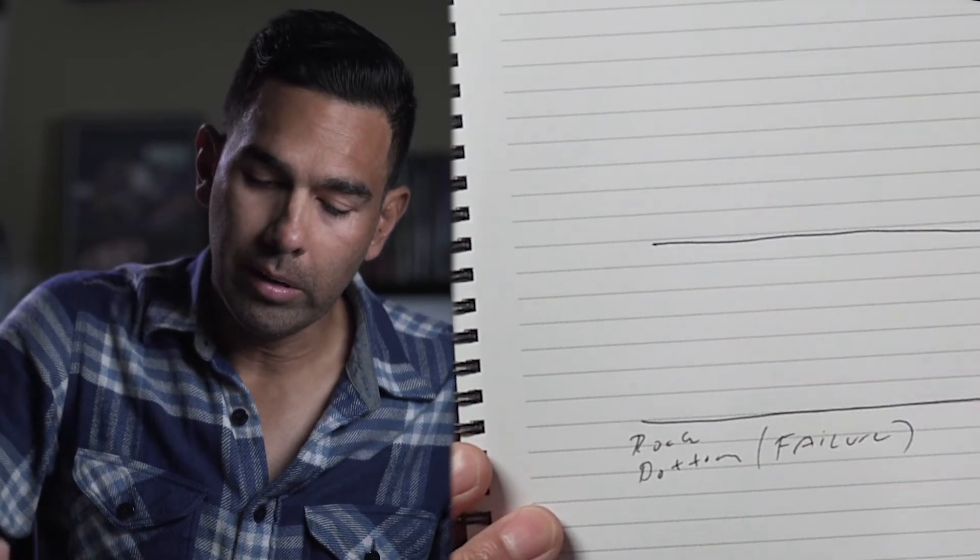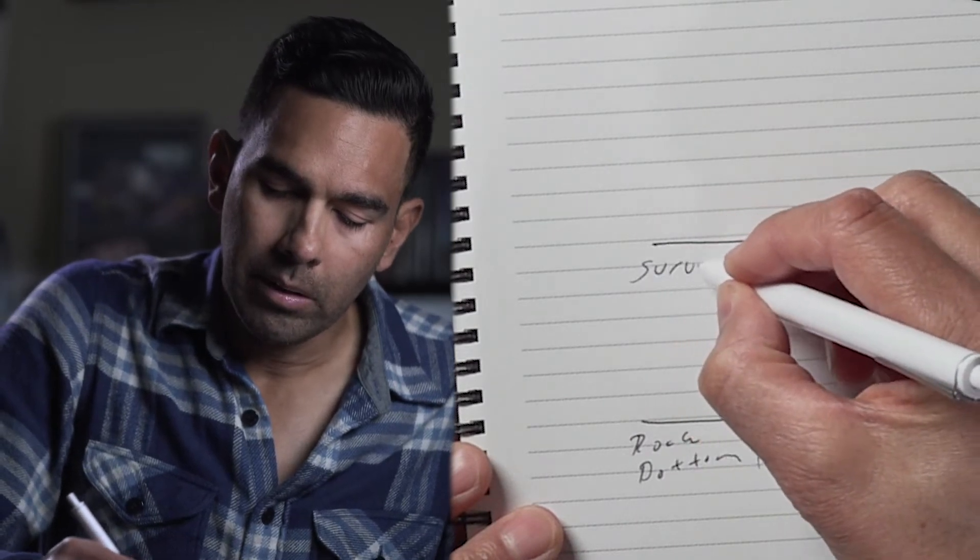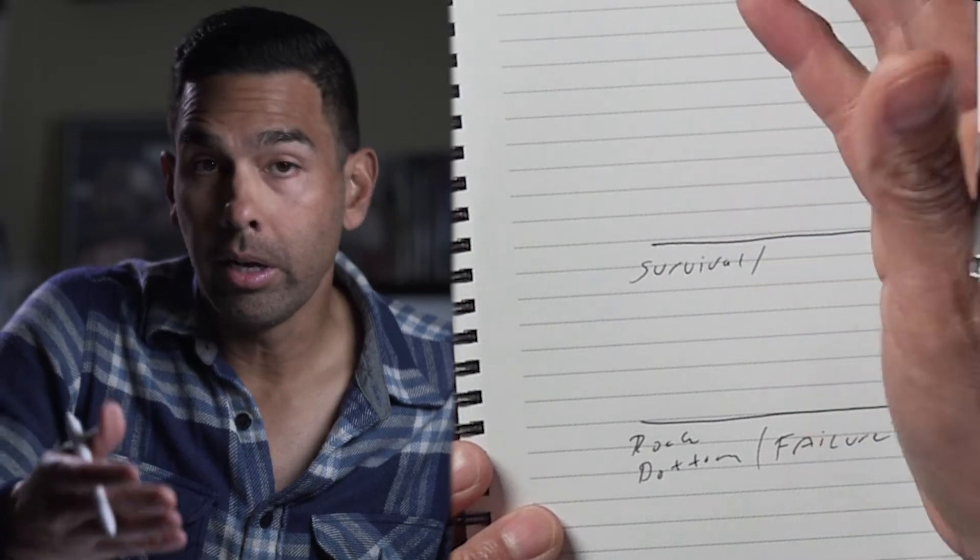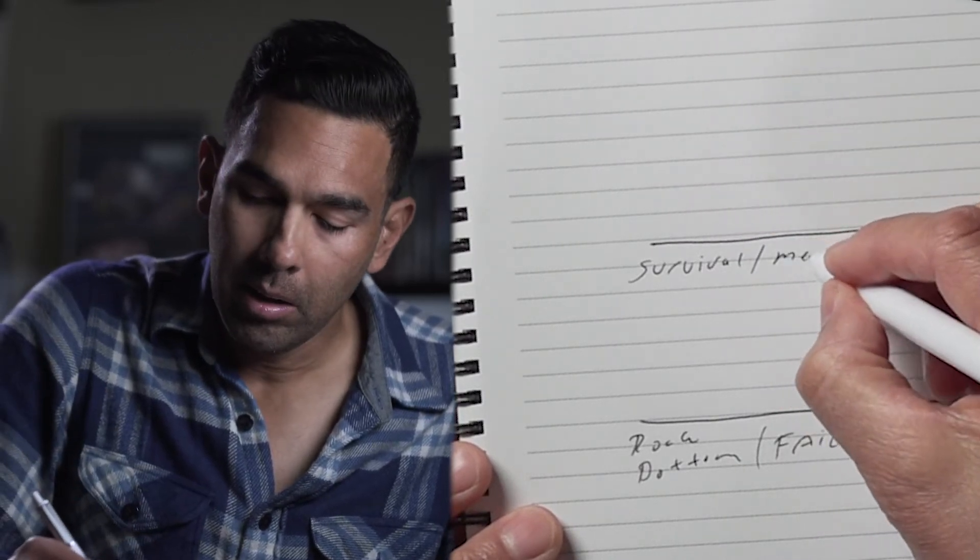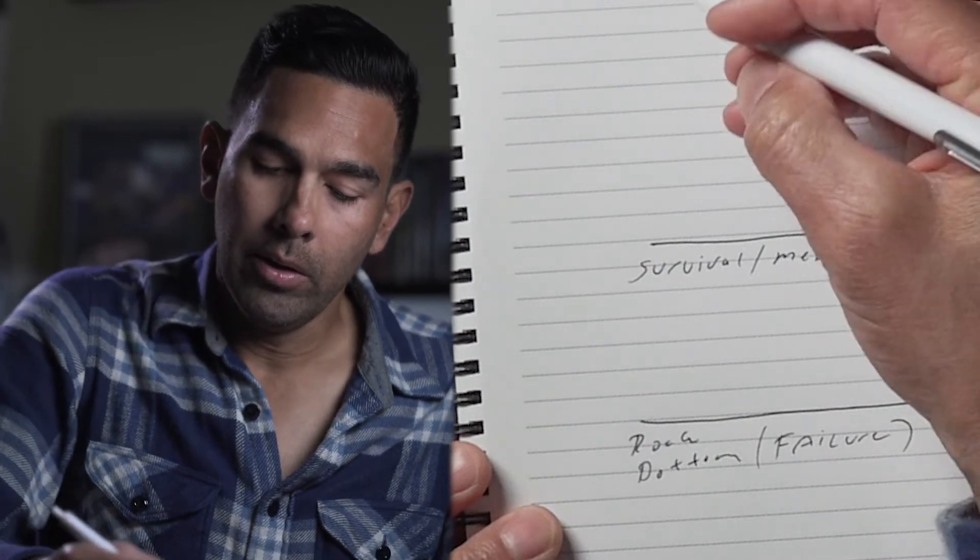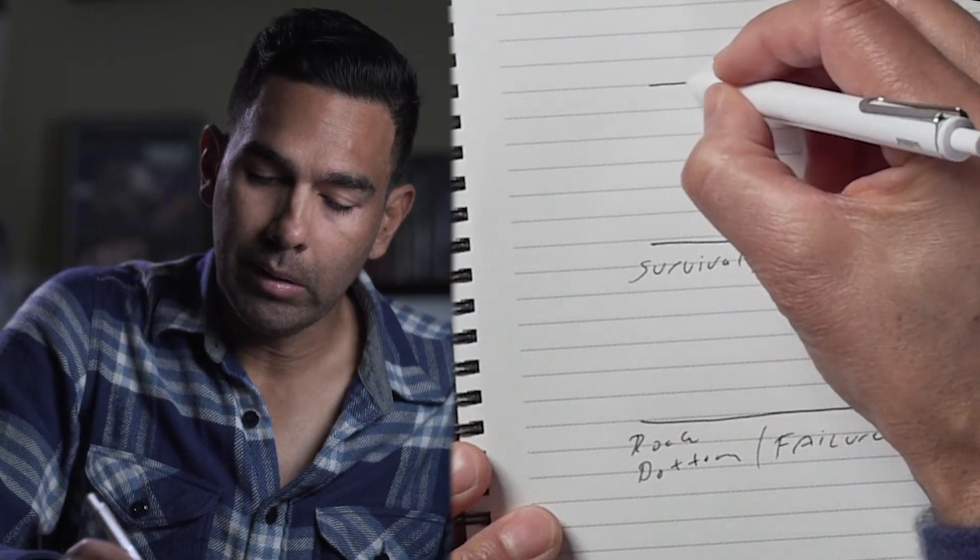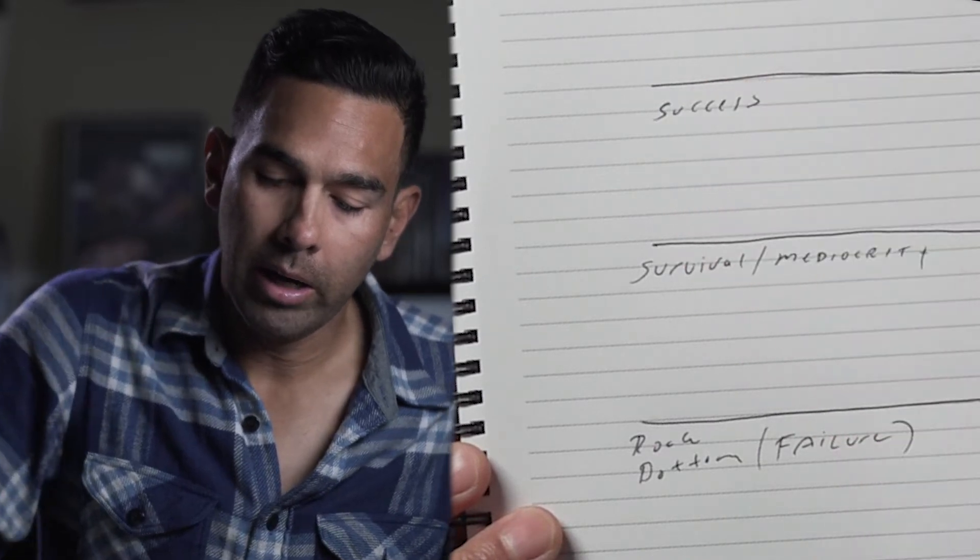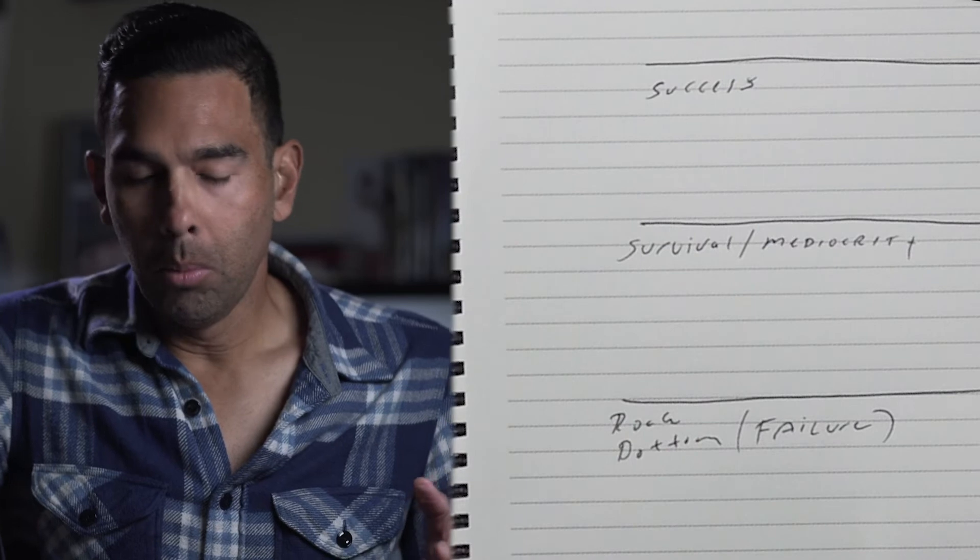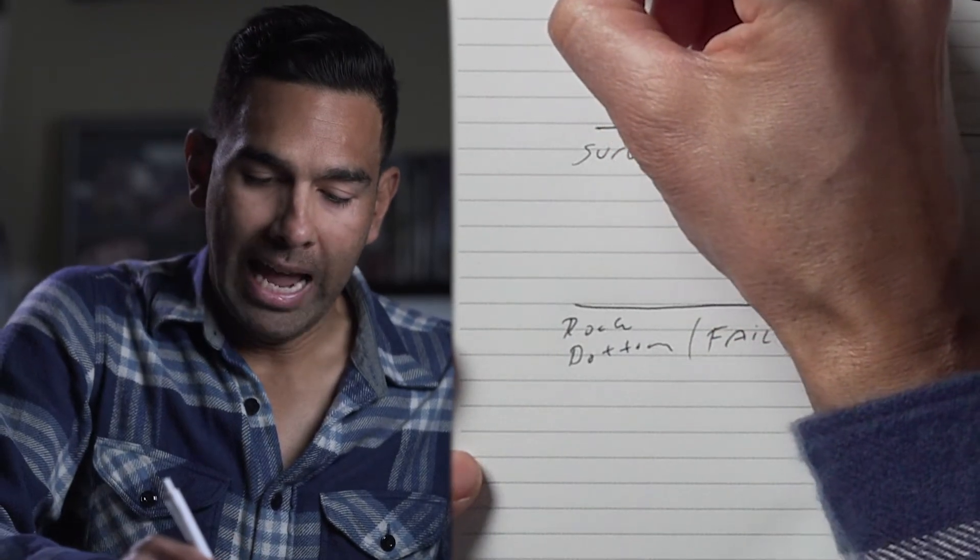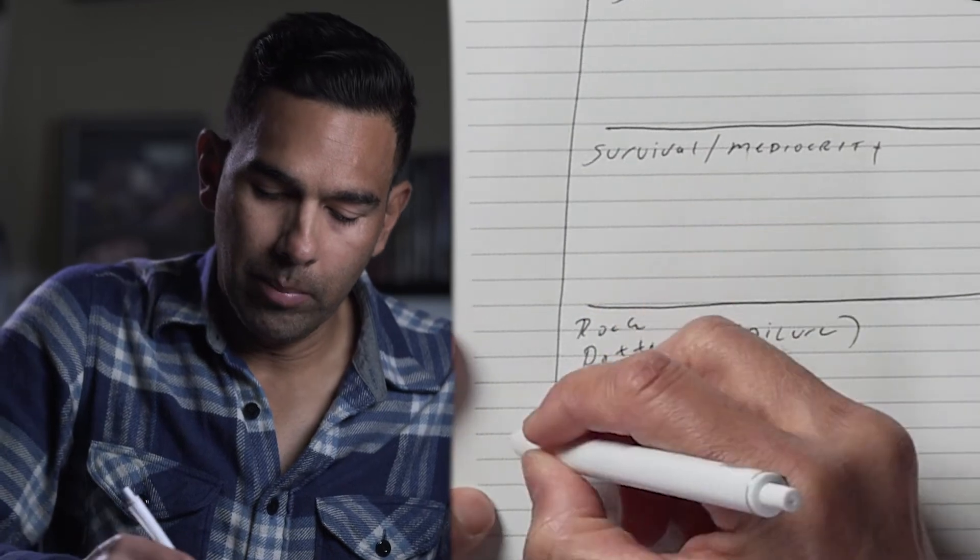This one here is going to be called survival, like what you need. And of course, this can also be known as mediocrity. And then over here, we're going to have this success category. And so what we're looking at here, if we were to start on this axis here, this is our starting point.